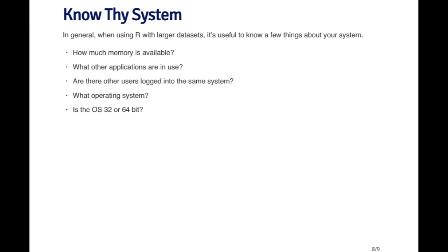So in general, when you're using R with large datasets, and there's lots of large datasets out there nowadays, it's useful to have a few bits of information on hand. For example, how much memory does your computer have? How much physical RAM is there? These days, most computers will have on the order of a few gigabytes up to many gigabytes of physical RAM. What other applications are in use? Are there other applications running on your computer that may be eating up some processor time, or memory?